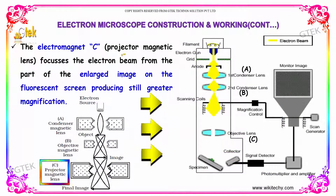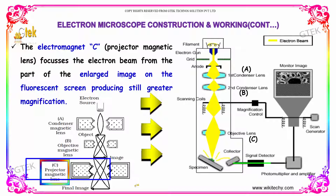Electromagnet C is the projector magnetic lens. It focuses the electron beam from the enlarged object onto the fluorescent screen, producing still greater magnification. The final image is obtained here.